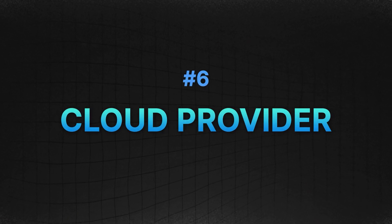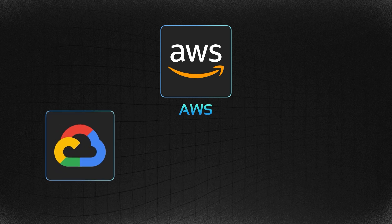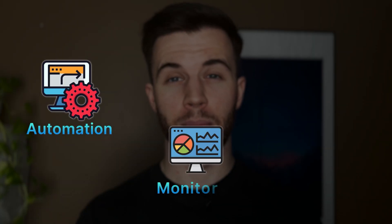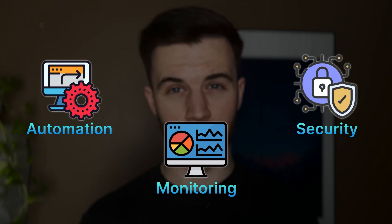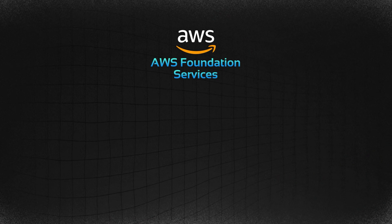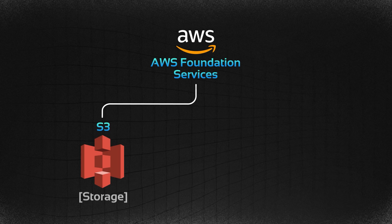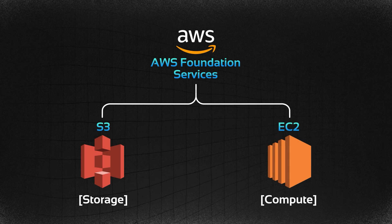As a DevOps engineer it's more than likely you'll be working with a cloud provider such as AWS, GCP, or Azure. These cloud platforms are the fundamental components of cloud computing, allowing for the provisioning and scaling of infrastructure on demand. Cloud services also offer a range of tools that support automation, monitoring, and security — all crucial components of DevOps. To start, dive into AWS foundational services such as S3 for storage and EC2 for compute, which will help establish a solid base in cloud infrastructure.